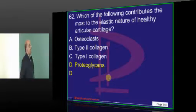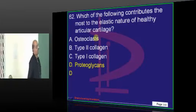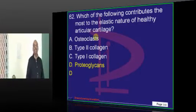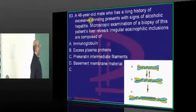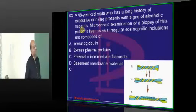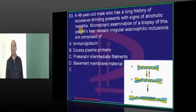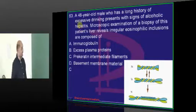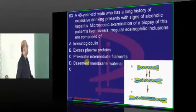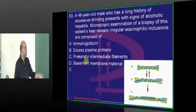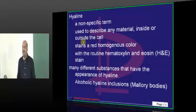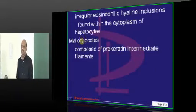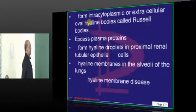Proteoglycans are the ones that create the elastic nature of our cartilage. In a 48-year-old with alcoholic cirrhosis presenting with Mallory hyaline bodies — these are made up of pre-keratin intermediate filaments, which are the part of the hyaline seen in alcoholic liver disease.